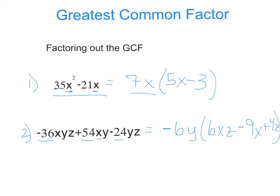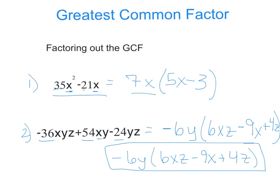So, my answer, negative 6y times 6xz minus 9x plus 4z. And that is the greatest common factor factored out. Remember, we don't want a negative starting in this number, so we always pull the negative out to the first term.